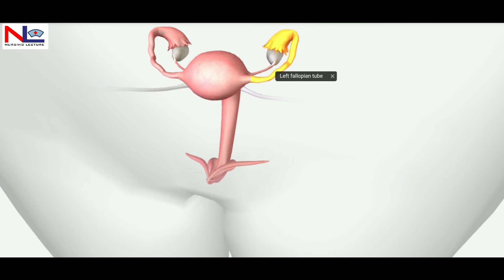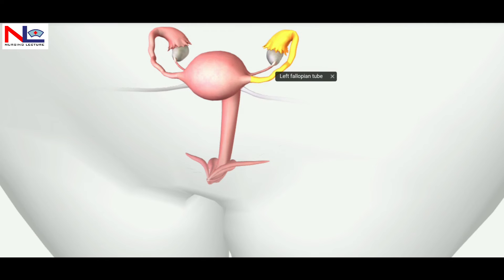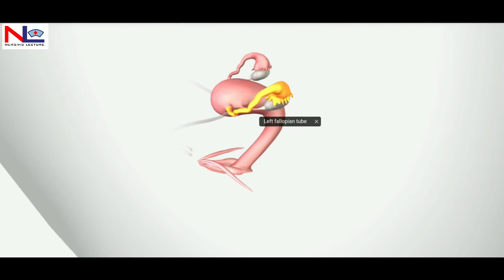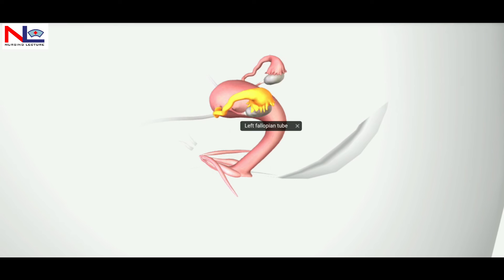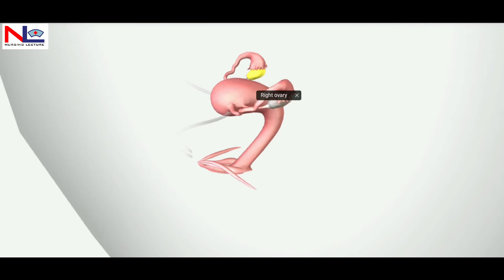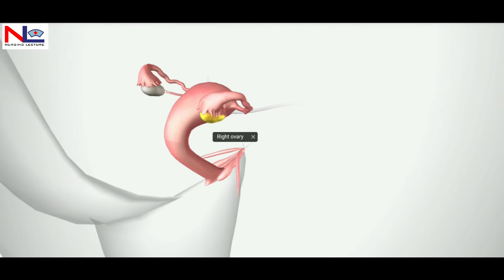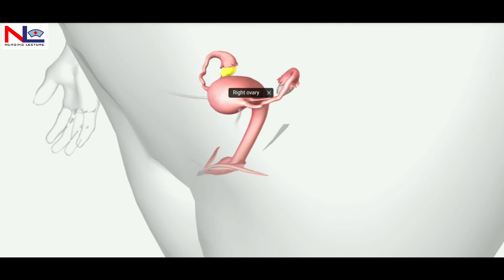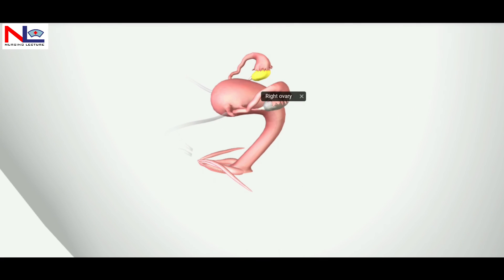Lateral to the uterus are paired oviducts, also known as fallopian tubes or uterine tubes. You can see the right and left fallopian tubes here. The last internal organs are the paired gonads known as ovaries — the right ovary and the left ovary.